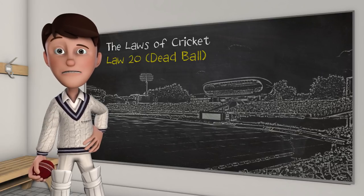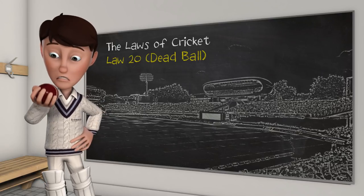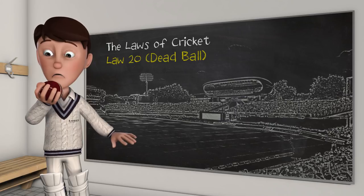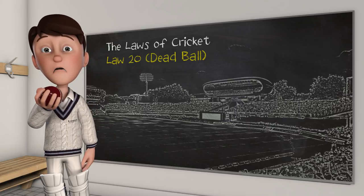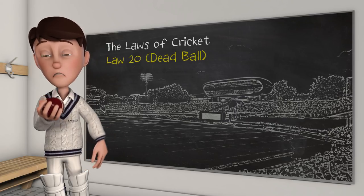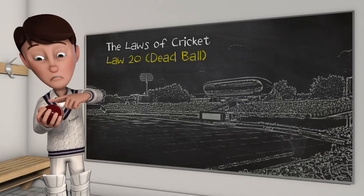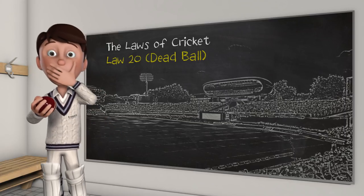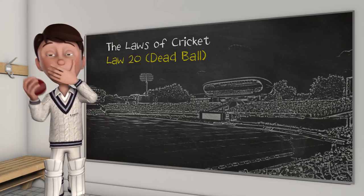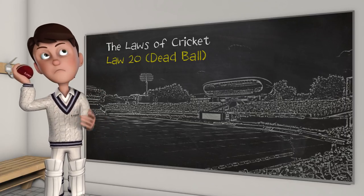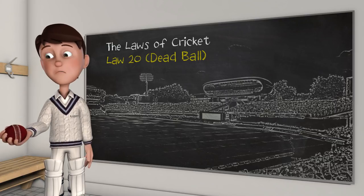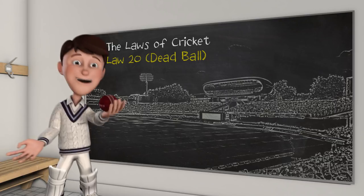Dead Ball. There are times when a ball becomes dead. Some are automatic, others are down to the judgement of the umpire. Once the ball is dead, nothing can happen which affects the scores or the game until the ball becomes live again.